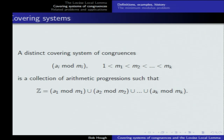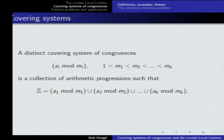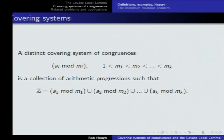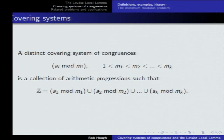A distinct covering system of congruences is a collection of congruences aᵢ mod mᵢ, where the moduli m₁ < m₂ < ... < mₖ are distinct — only finitely many — and the union of those congruences is all the integers. It's a collection of arithmetic progressions. The moduli are different, and to avoid triviality, the least modulus is larger than 1.